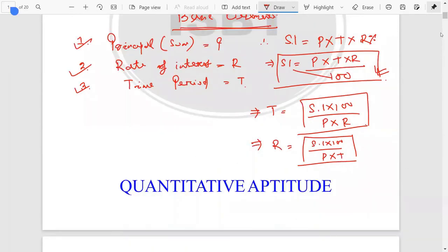Here also we can find P like this - P is equal to SI into 100 divided by T into R. This is the formula. Using this formula, we can write another formula.